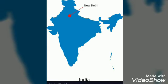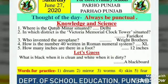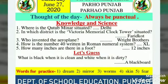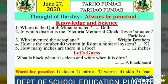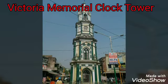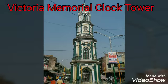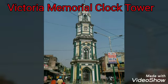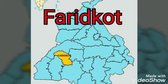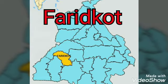Now the second question: in which district is the Victoria Memorial Clock Tower situated? The answer is Firozpur. The beautiful building of Victoria Memorial Clock Tower is situated in Firozpur district of Punjab. It was built by Raja Balbir Singh in memory of Queen Victoria of England. You can see here where Firozpur is located on the map of Punjab.